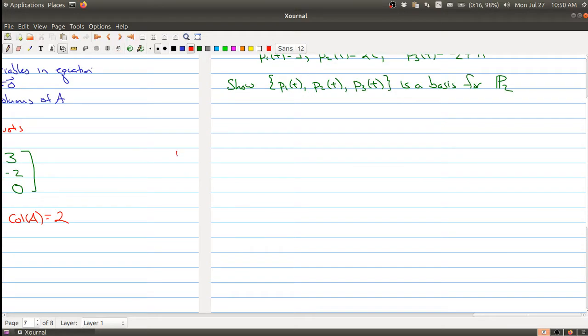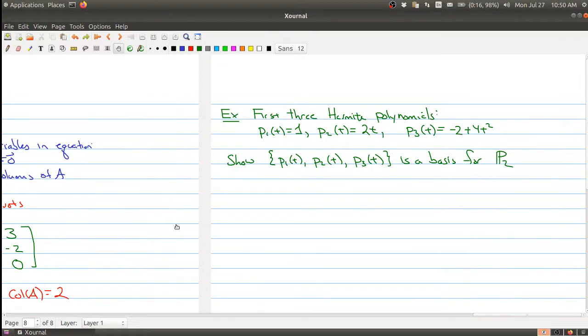I thought I would end off by doing a little bit more complicated example. So here are three polynomials and they're called the Hermite polynomials and they show up in a different area of math. But they have a nice property that you can show that at least the first three are a basis for p2. And you can actually keep extending this. I'm just doing a special case.